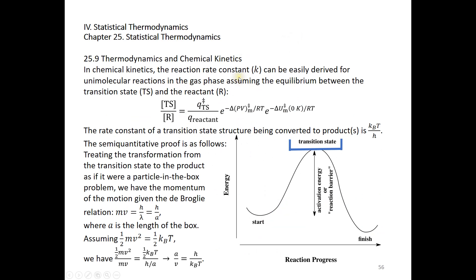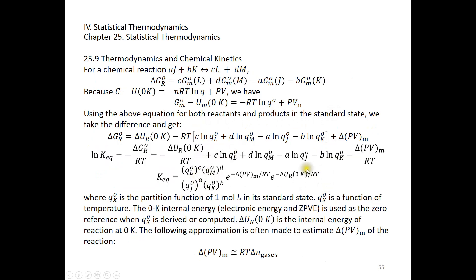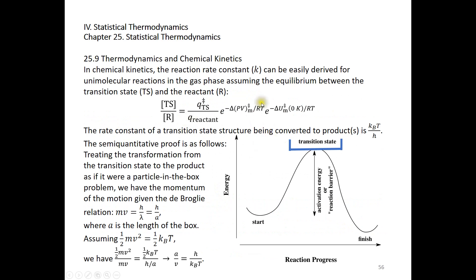In chemical kinetics, the reaction rate constant k can be derived for unimolecular reactions in the gas phase, assuming equilibrium between the transition state and the reactant. The concentration of the transition state divided by the concentration of the reactant follows from the equilibrium constant expression. If the two products are replaced by the transition state and the two reactants remain, we get the ratio Q of the transition state over Q of reactants.